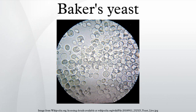Saccharomyces exiguus is a wild yeast found on plants, fruits, and grains that is occasionally used for baking. However, in general it is not used in a pure form but comes from being propagated in a sourdough starter.